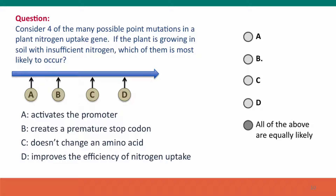All of these mutations are equally likely to occur because the processes that give rise to mutations can't discriminate on the basis of their consequences for the function of the gene or the function of the organism.